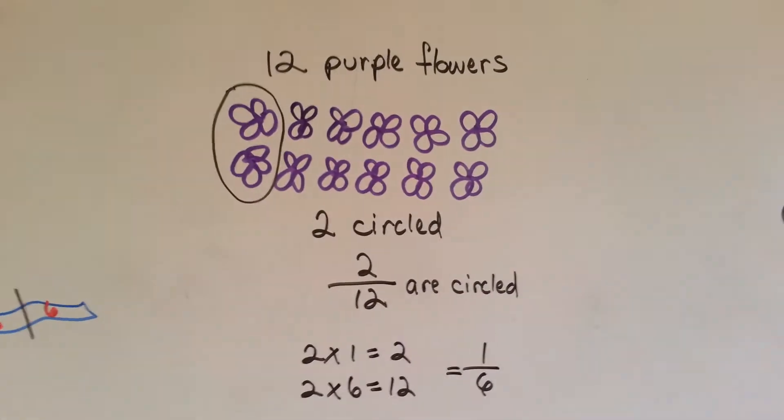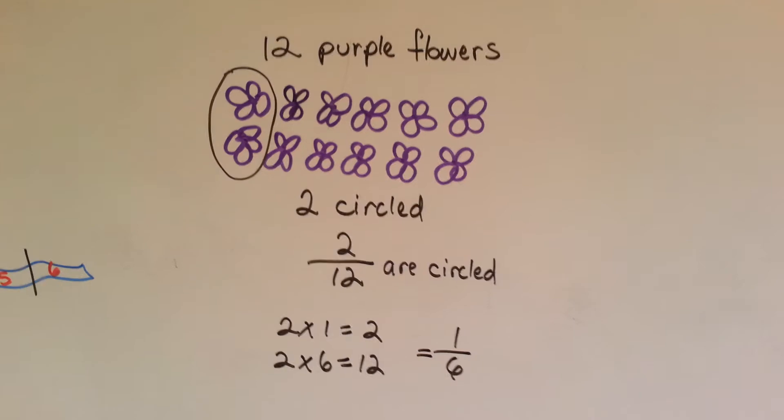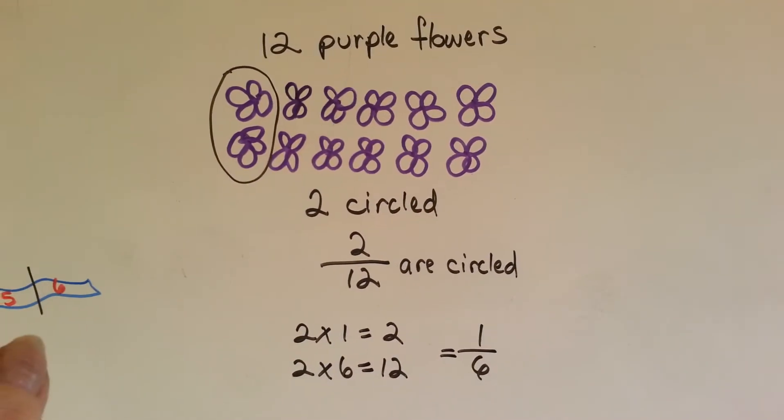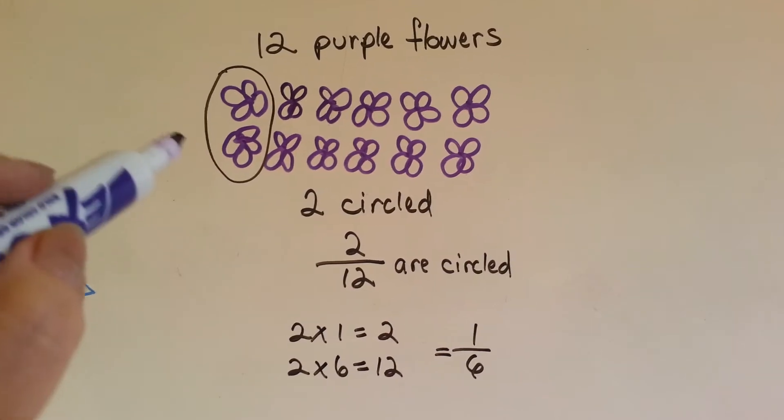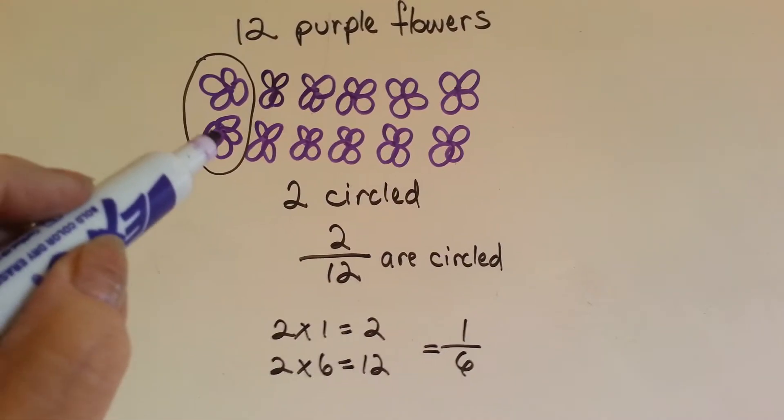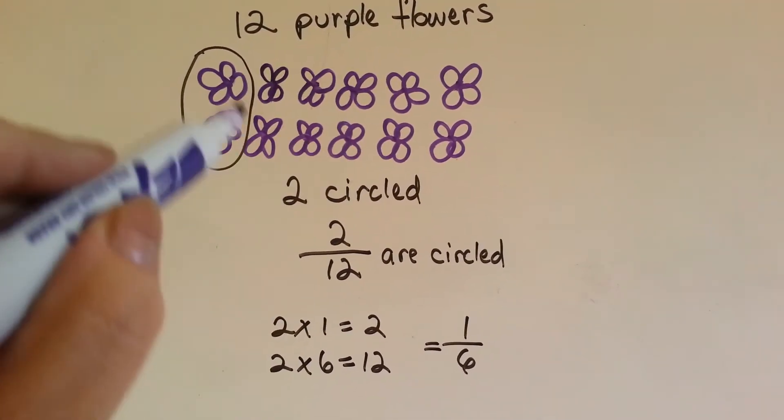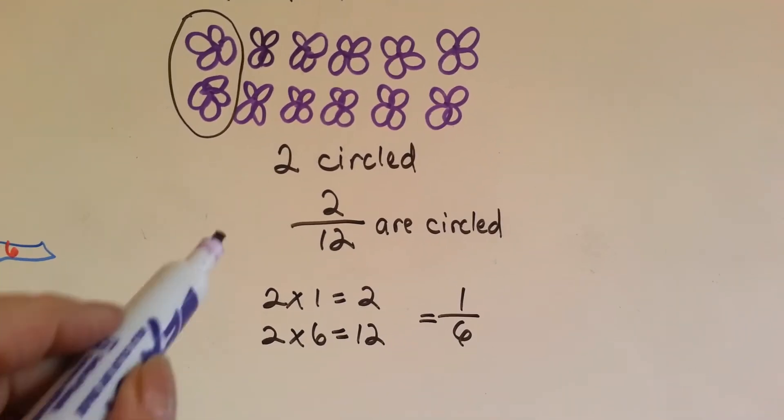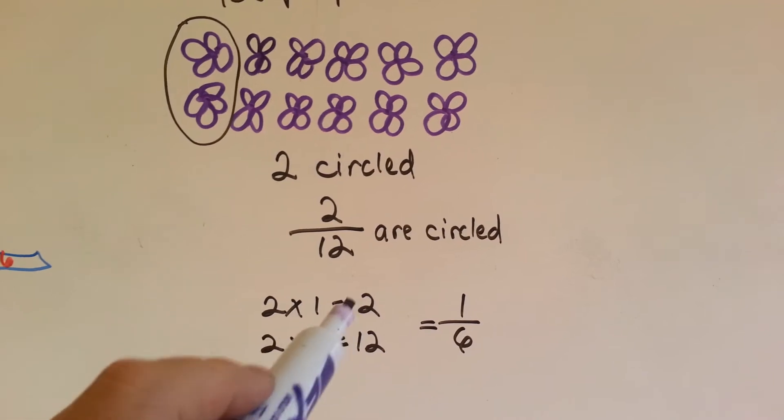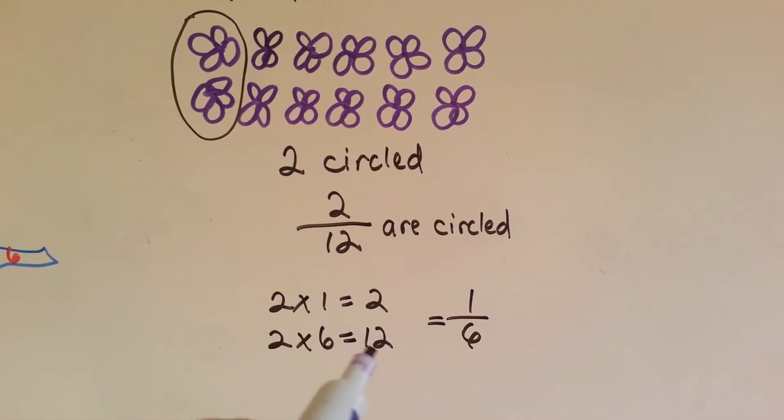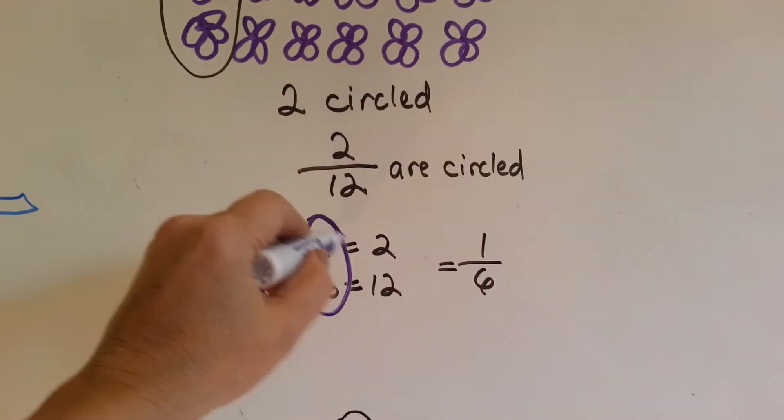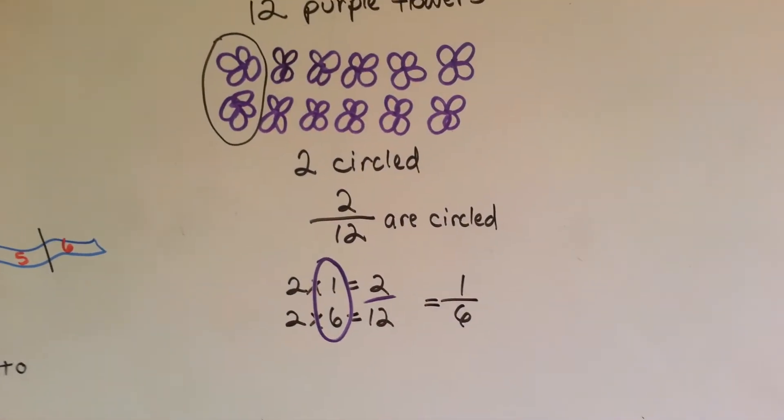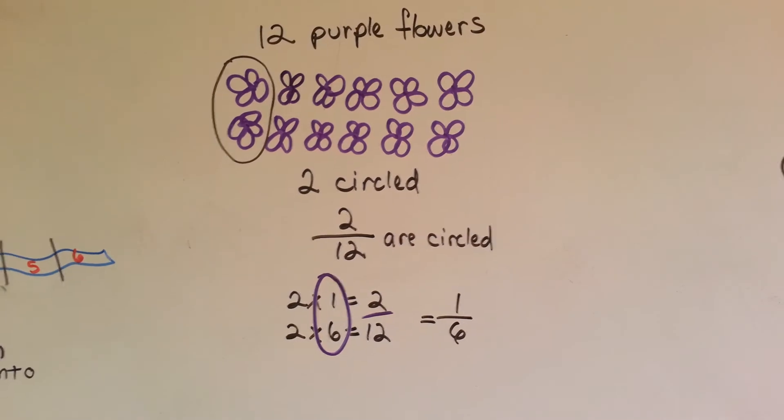Let's look at this. There's twelve purple flowers. Two of them are circled. Maybe those are the two you took to go give to your mom. So two are circled out of twelve total. So two-twelfths are circled. Two times one is two. Two times six is twelve. Here's our one-sixth and there's our two-twelfths. Two-twelfths is equal to one-sixth.